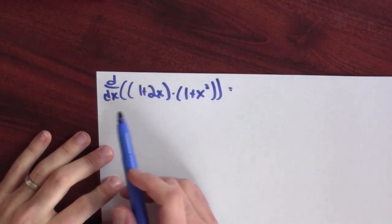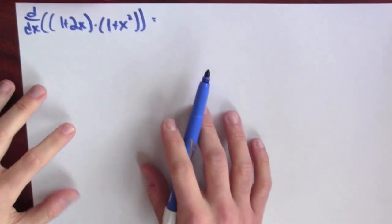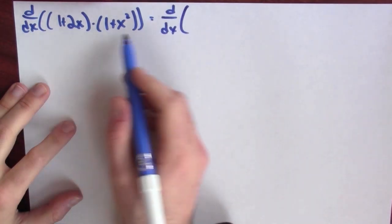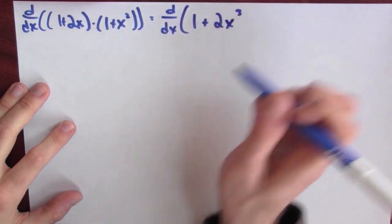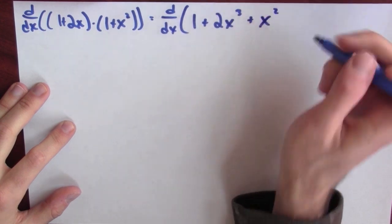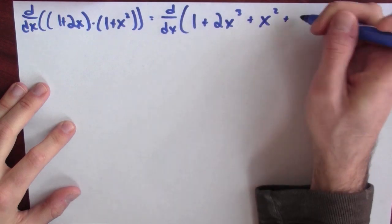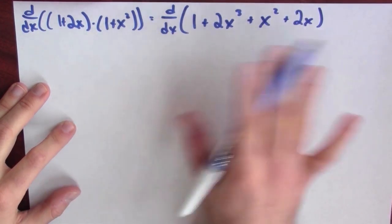We didn't really need the product rule to compute that derivative. So instead of using the product rule, I'm going to first multiply this out and then do the differentiation. So this is the derivative of: 1 + 2x³ — which is what I get when I multiply 2x by x² — plus x², which is 1 times x², plus 2x times 1. Now I can differentiate this without using the product rule.